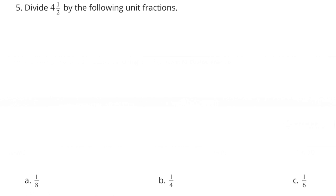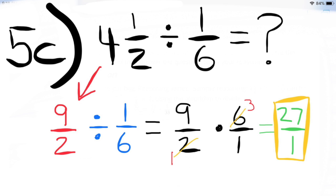C: one-sixth. Four and a half divided by one-sixth — four and a half equals nine-halves. Nine-halves divided by one-sixth equals nine-halves times six over one, which equals twenty-seven over one, or twenty-seven. There are twenty-seven groups of one-sixth in four and a half.